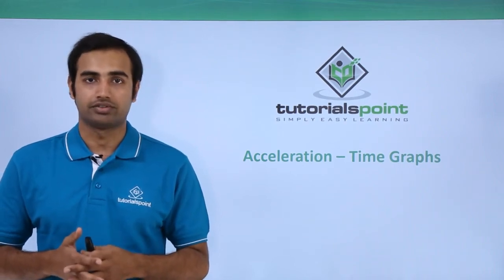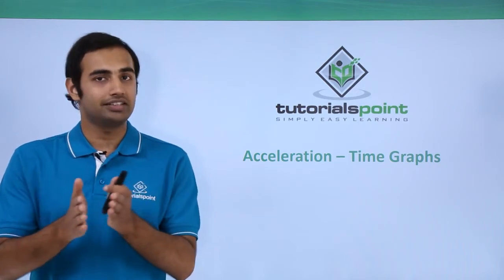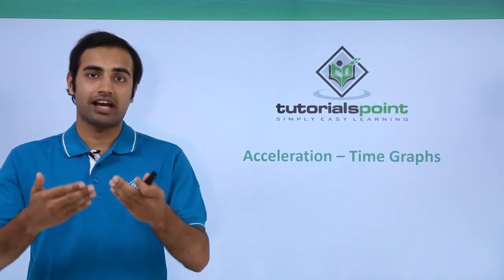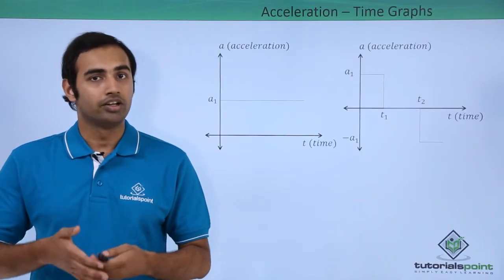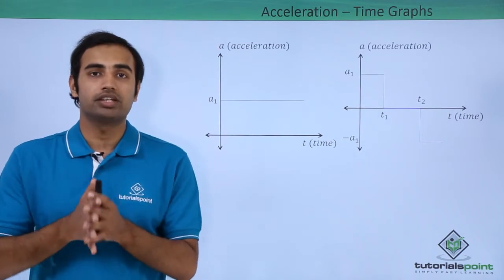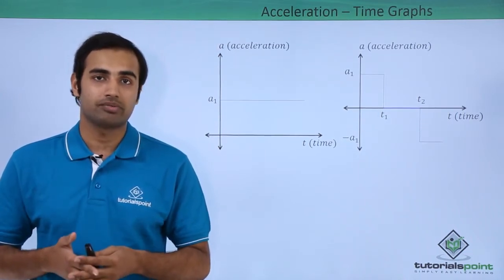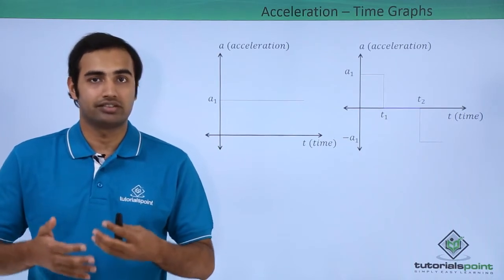Let's talk about acceleration time graphs. Much like position time and velocity time graphs, acceleration time graphs give us the changing acceleration of an object with respect to time when it is in motion. Now over here we have some sample AT graphs that we will be discussing, but once again you can notice that along the y-axis we place acceleration and along the x-axis we place time. That is the general convention.